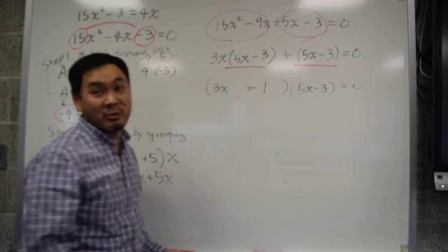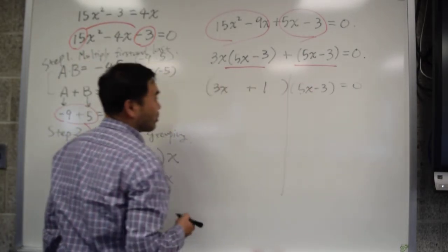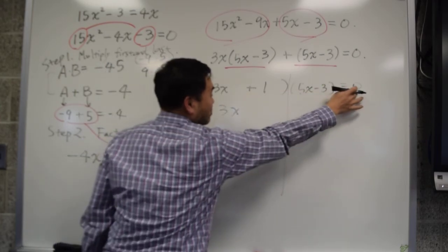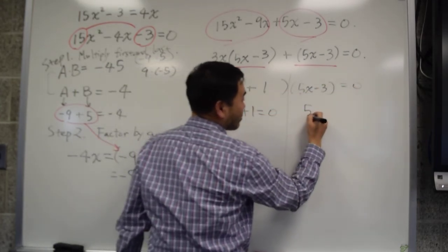Then step 3 will be solve this. That one I don't even have to write it. Solving means you say if two things multiply to 0, that means either the first thing is 0 or the second thing is 0.